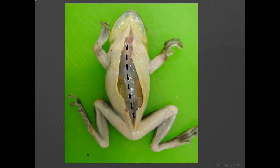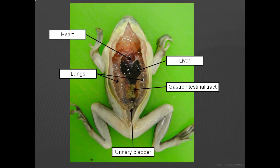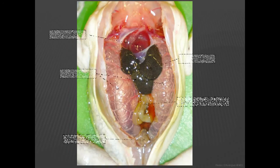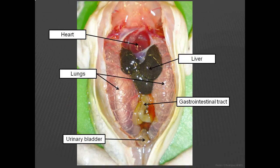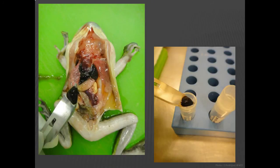Incise through the peritoneal membrane from the pectoral area to the inguinal region. This exposes the heart, lungs, liver, portions of the gastrointestinal tract, and the urinary bladder. If there is accumulation of fluid within the celomic space, this fluid can be collected with a syringe and needle for cytology and culture. This is also a good opportunity to collect a small sample of liver and place it in a cryovial for frozen archival. This sample could be used for toxicology or nutritional assays, and can also be used for virus isolation.